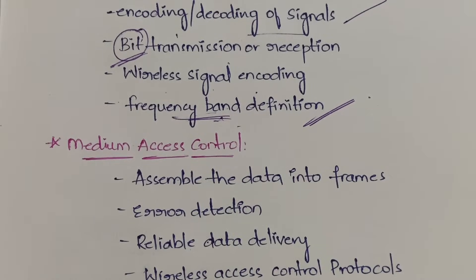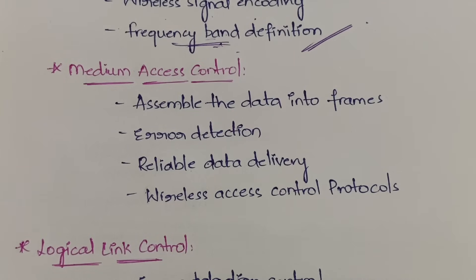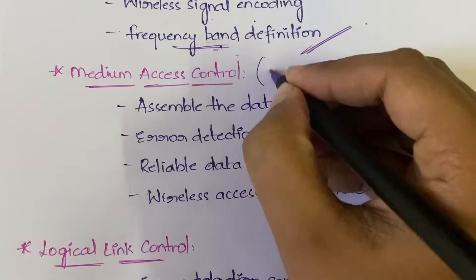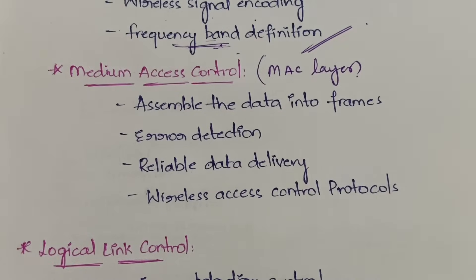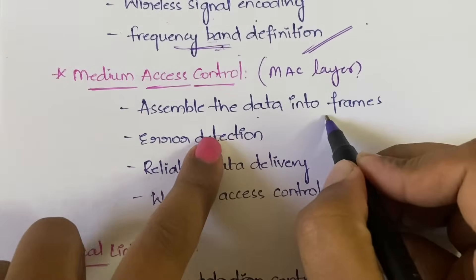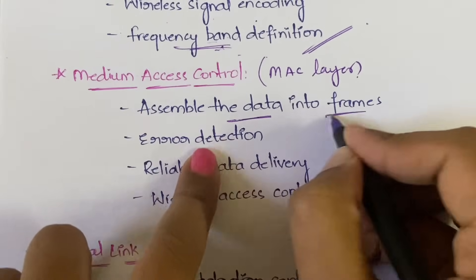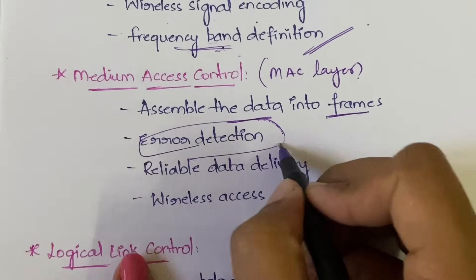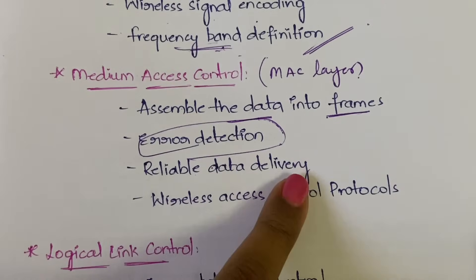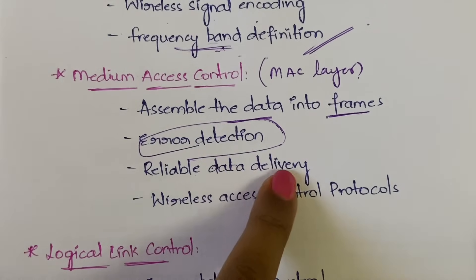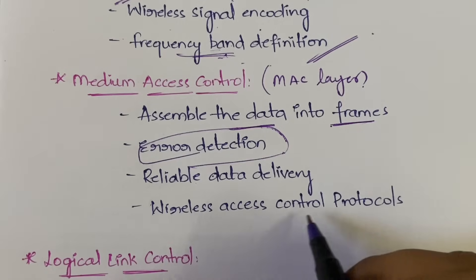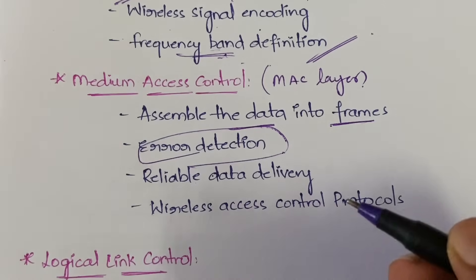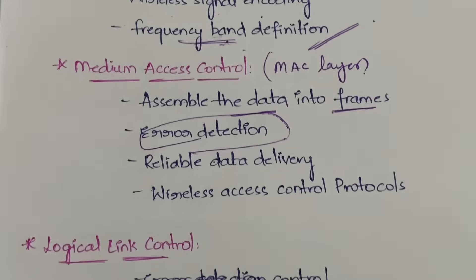After the physical layer comes the MAC (medium access control) layer. Here, data is assembled into frames, error detection is performed to find any errors, reliable data delivery is ensured, and wireless access control protocols are defined and operated.